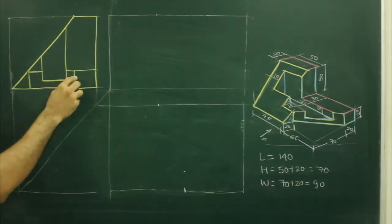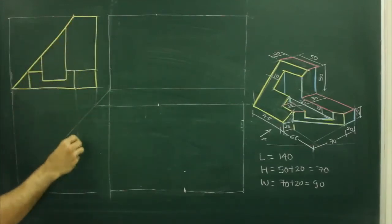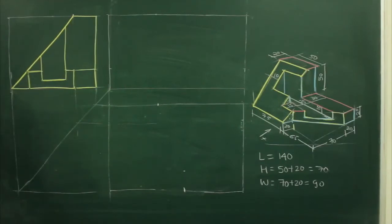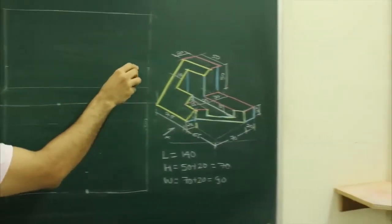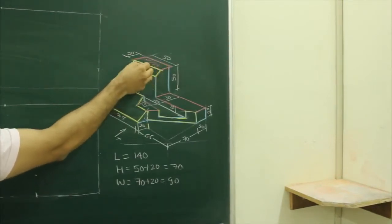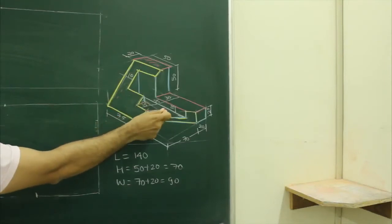After this we will draw top view, now for top view we will project from here. First thing, what we will see in top view is 50 by 20, that is this portion, then you will see this portion also, then you will see this as well as this plus this.